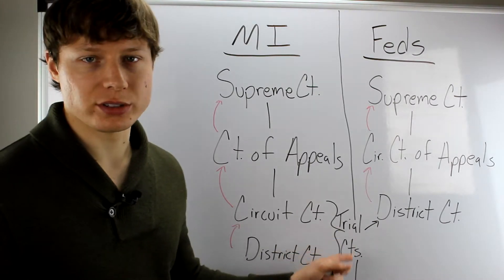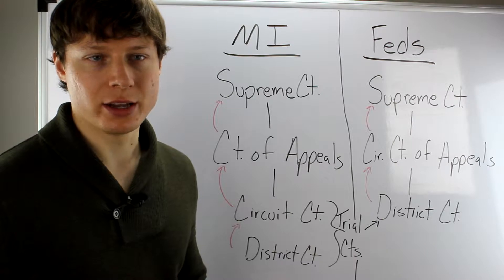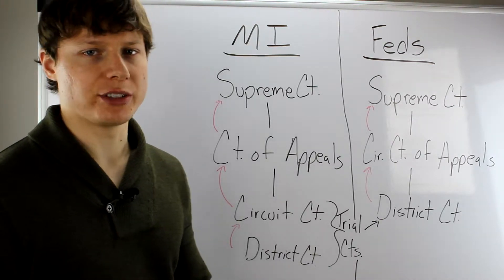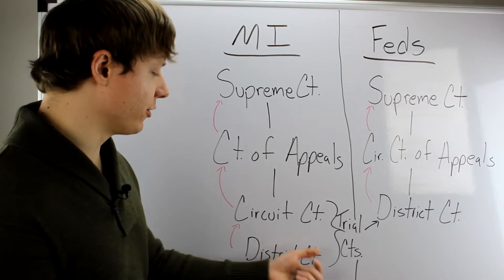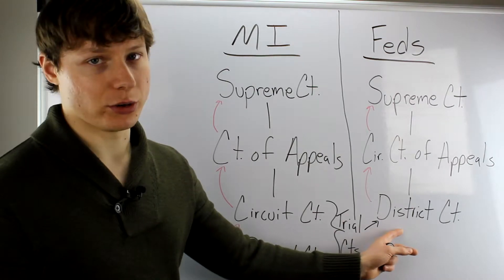Again, these are trial courts. Trial courts means that's where everything basically happens. Where you're going to do subpoenas or you're going to testify, you're going to have a jury trial, bench trials, all that stuff is going to happen in a trial court level. If you're doing it in the federal system, it's going to be the district court.